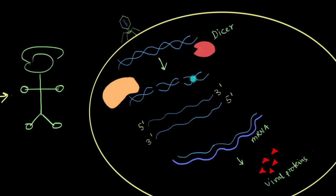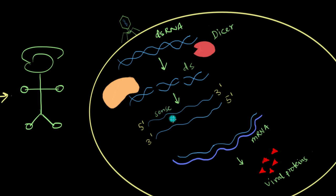Once these smaller RNA pieces are loaded onto this yellow colored multi-enzyme complex, it's going to split the RNA into its strands. This is a double-stranded RNA. It's chopped down and these pieces are still double-stranded. When it is split apart, these two strands completely separate. One of these strands runs in the 5' to 3' direction — this is the sense strand. There's another strand which runs in the opposite direction, and this is called the anti-sense strand. What this complex is going to do is get rid of this sense strand and hold on to this anti-sense strand.